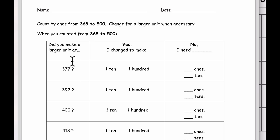So if they were to say to themselves at 377, have they cached in for a larger unit? The answer is no. In fact, what they need is three more ones. So the idea would be you would put a three right here.